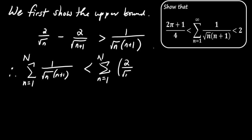The sum from n equals 1 to n of 1 over the square root of n times n plus 1 is less than the sum from n equals 1 to n of 2 divided by the square root of n minus 2 divided by the square root of n plus 1. This simplifies to 2 minus 2 divided by the square root of n plus 1.